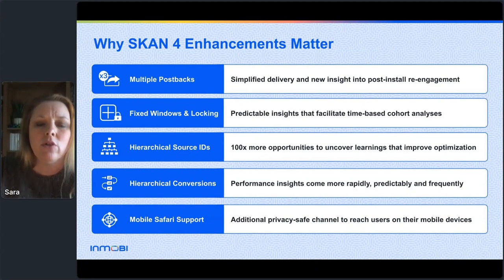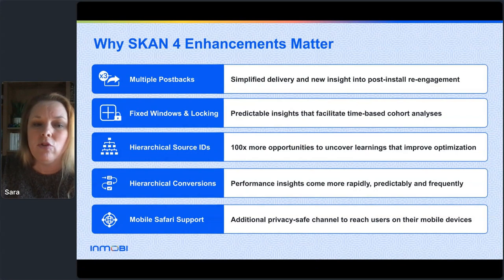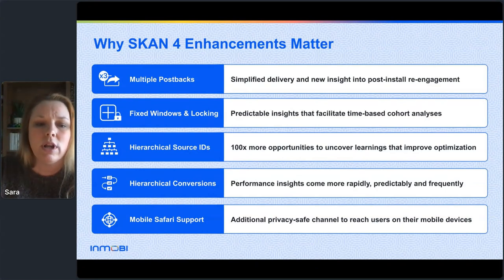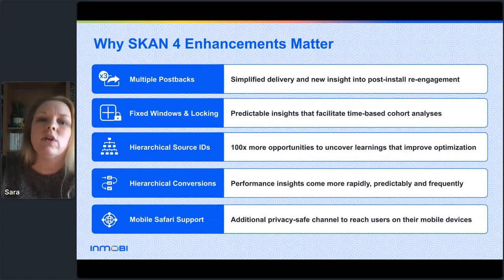To recap the exciting enhancements SKAN 4 brings: multiple postbacks with simplified delivery give a whole new level of insight into post-install re-engagement; fixed windows and locking make insights more predictable and facilitate time-based cohort analyses; hierarchical source IDs give a hundred times more opportunities to uncover learnings that improve optimization; hierarchical conversions provide performance insights more rapidly, predictably, and frequently; and mobile Safari support covers basically 90% of mobile browser traffic, adding a great new privacy-safe channel for reaching users on iOS devices.